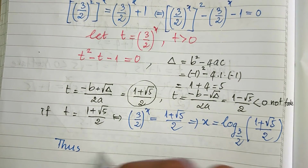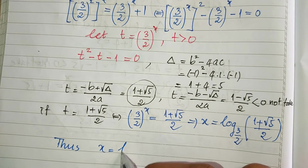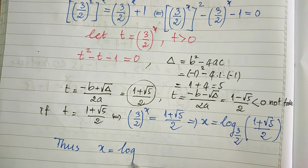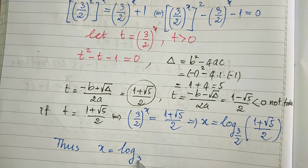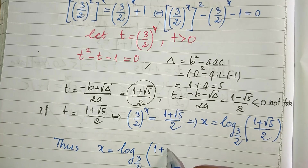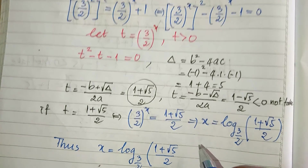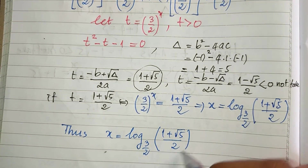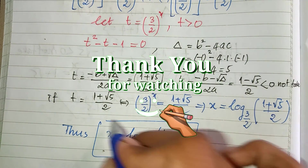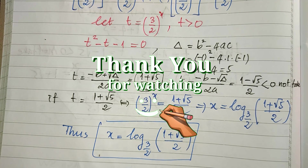So x = log base (3/2) of [(1 + √5)/2] is our solution. Thank you for watching. If you like my videos, please don't forget to subscribe to my channel for more exciting videos. Goodbye!